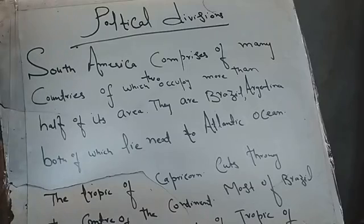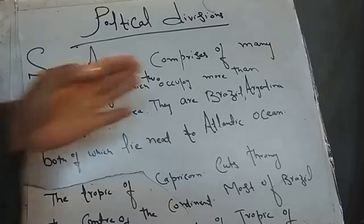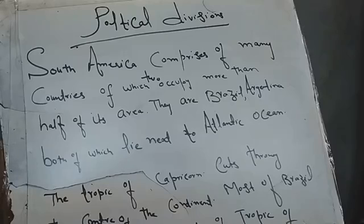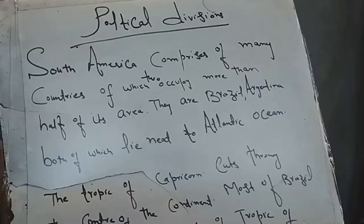Listen, these countries form the political divisions among themselves. But the key point is that in this continent there are two big countries. These two big countries are Brazil and Argentina, which together occupy half the area of the continent. The remaining countries occupy the other half. These two countries — Argentina and Brazil — are the biggest countries.